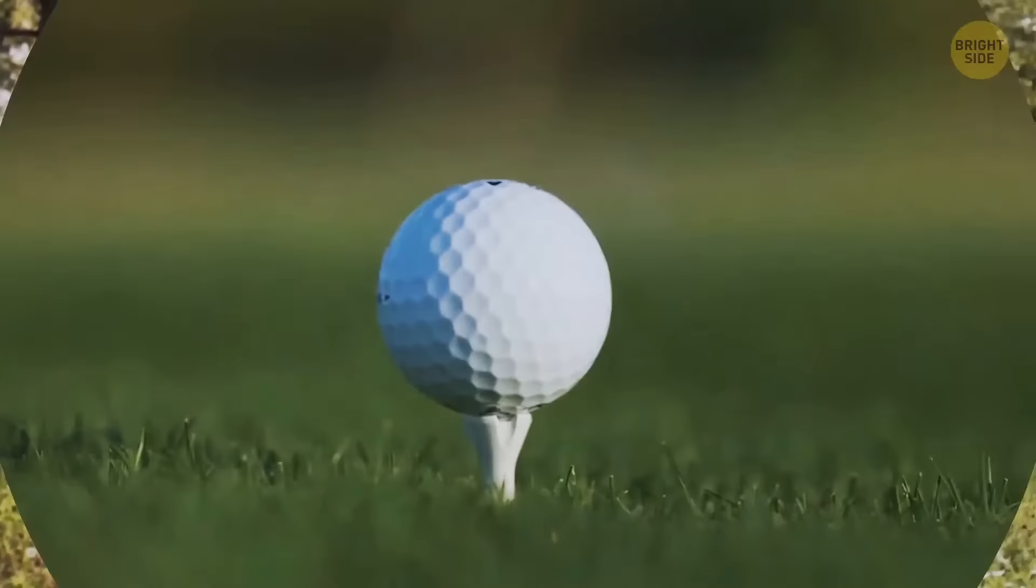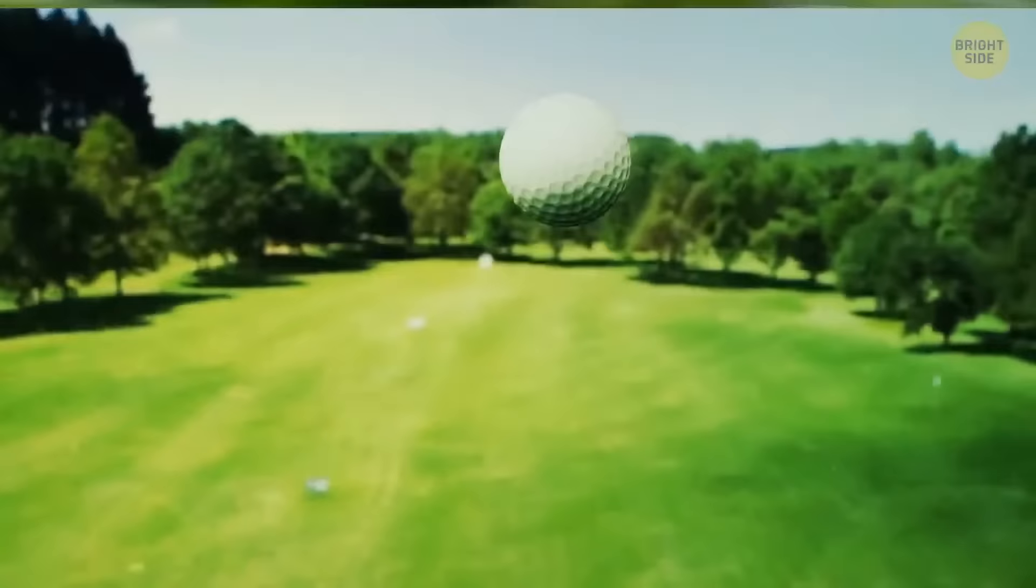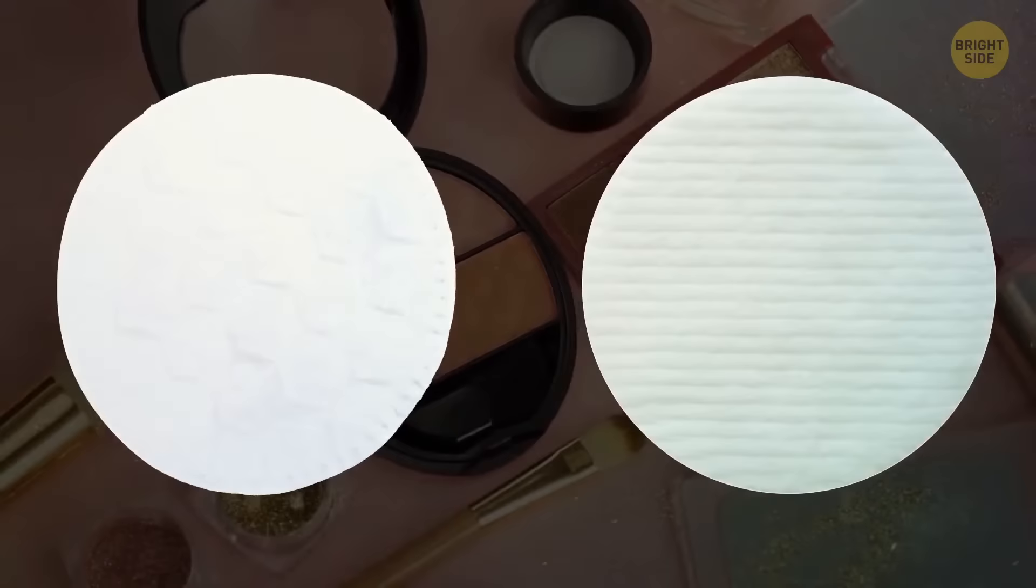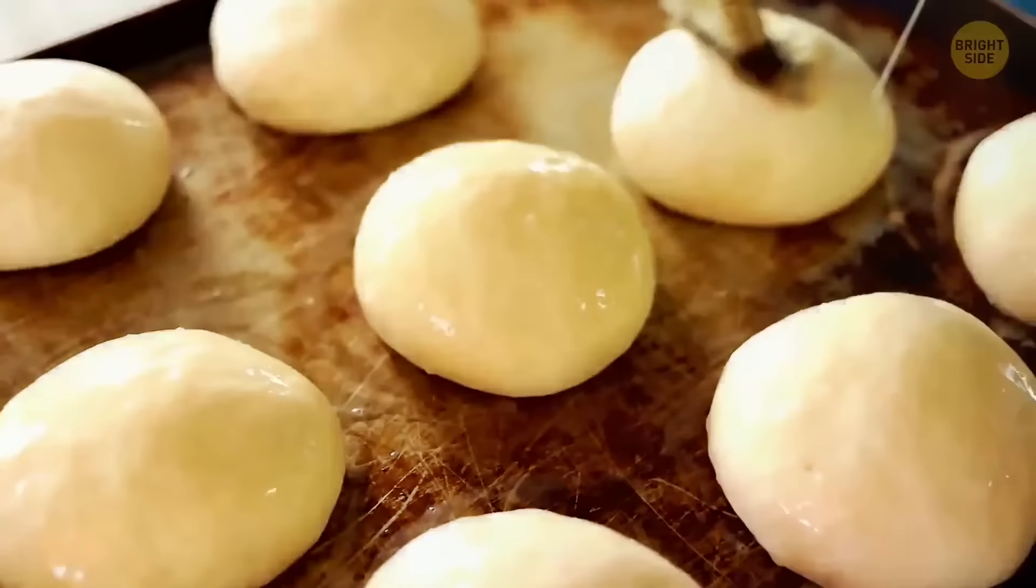Golf balls are covered in dimples rather than being perfectly round so that the ball can fly through the air more smoothly, decreasing the drag and allowing it to travel further and faster. Your makeup pads have two different sides for a reason. The bumpy side is used for applying makeup while the flat side is for removing it. Donuts have holes so that the inside and outside cook evenly. Before the holes were added, the inside would often be greasy and doughy while the outside was crisp.